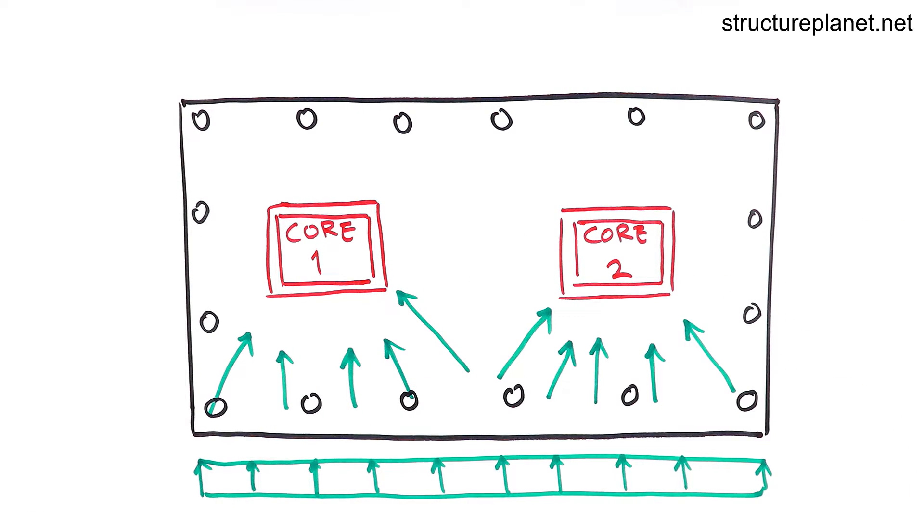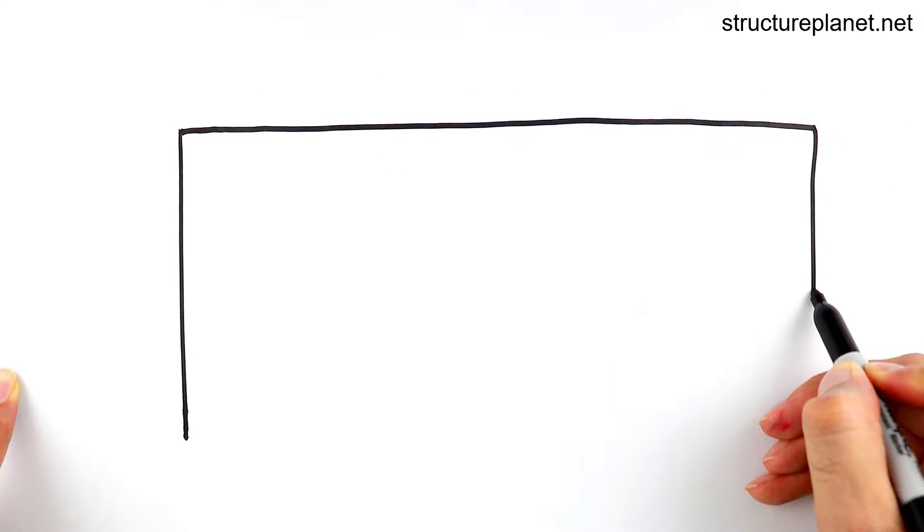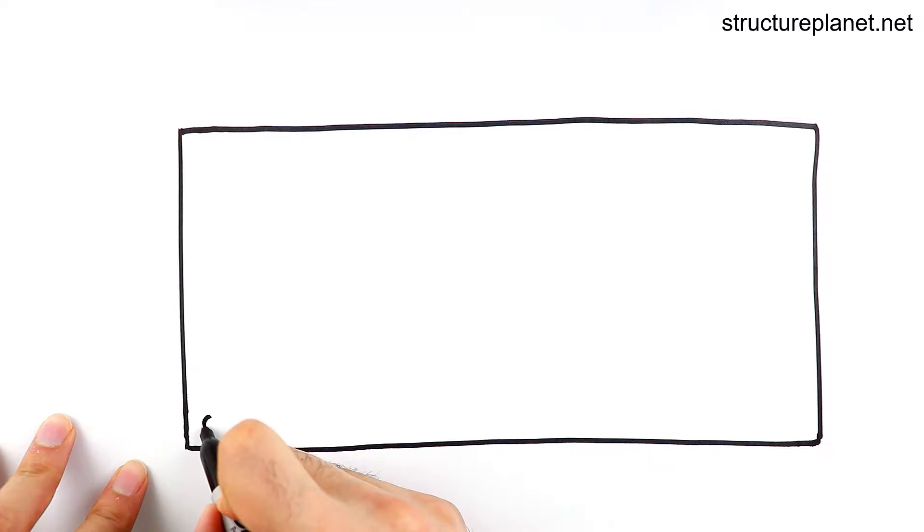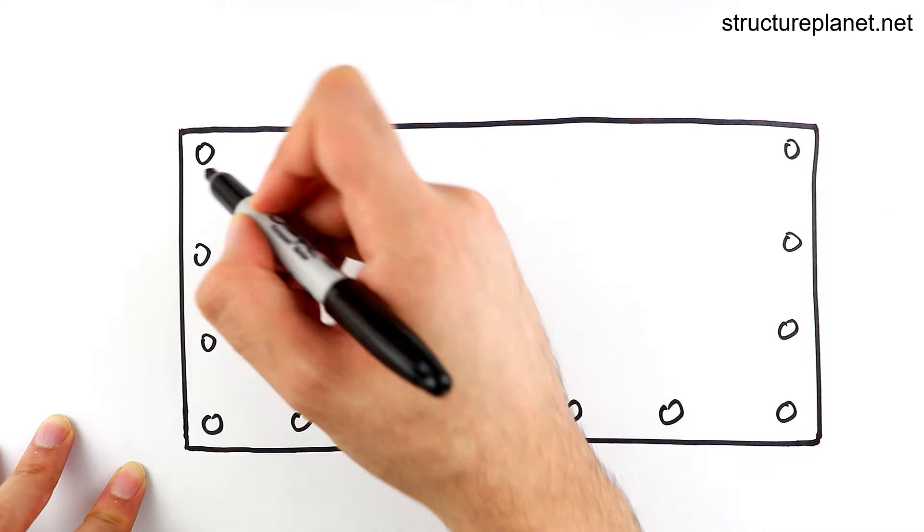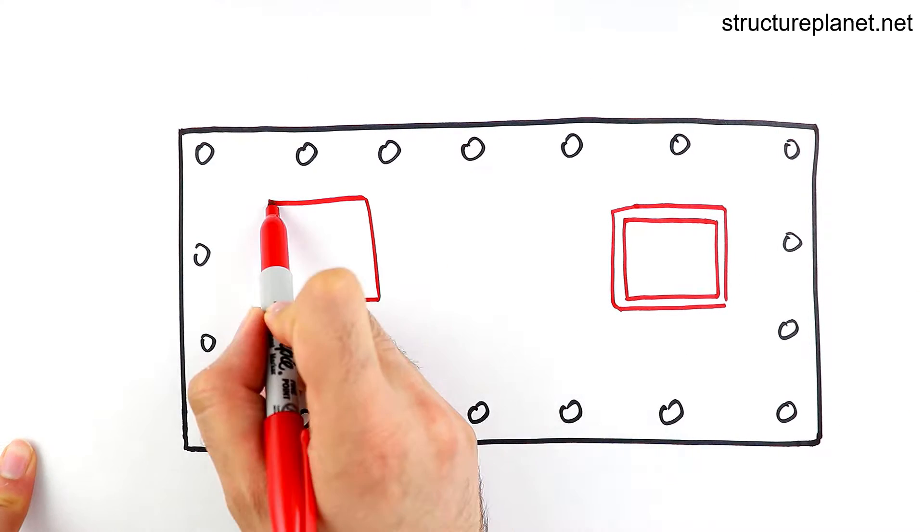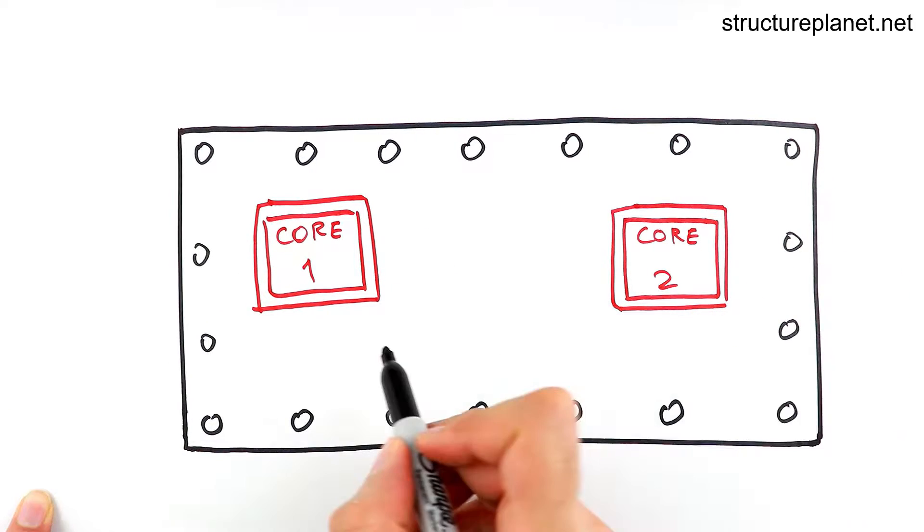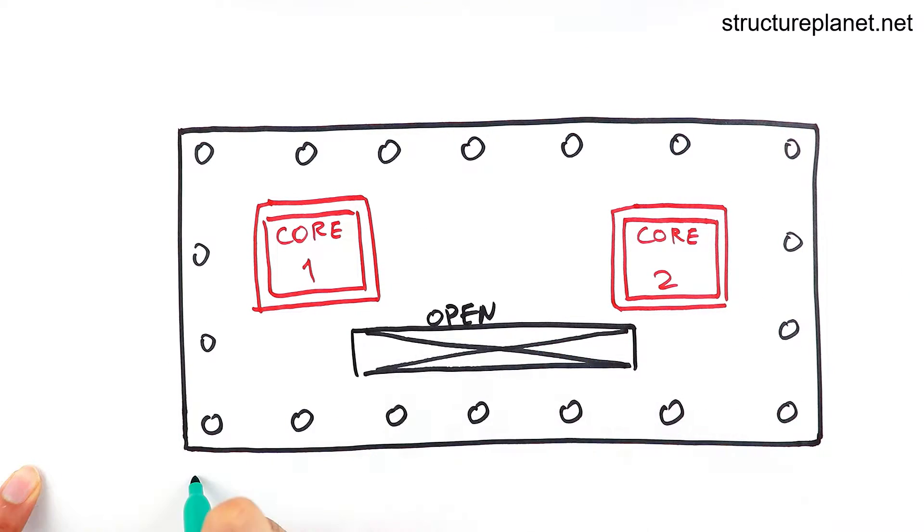Now let's assume that we have a concrete floor slab with a large opening. This opening will disturb the load path for a portion of the applied lateral load since forces close to this region have to travel around the opening to get to the lateral system.